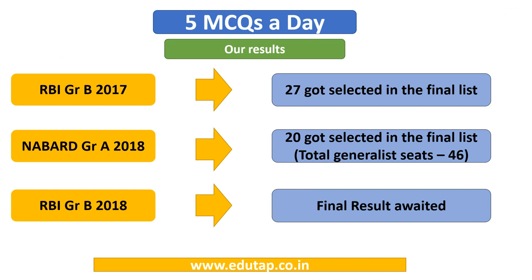Before beginning the lecture, let us tell you why EduTap. 27 of our students got selected in RBI Grade B 2017 finals, and the recently announced results of NABARD Grade A have once again proved our capability — 20 out of 46 generalist seats have been bagged by EduTapians. The final result of RBI Grade B 2018 is awaited and we are confident our students will come out with flying colors.